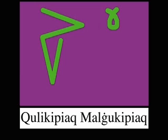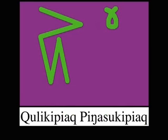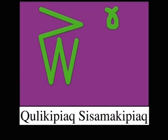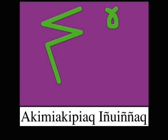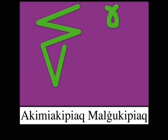The 240th number is kulikipiak malaguqi biak, 10 times 20 plus two times 20. The 260th number is kulikipiak pingasuki biak, 10 times 20 plus three times 20. The 280th number is kuli kipiak sisamakipiak, 10 times 20 plus four times 20. The 300th number is akimiya kipiak, 15 times 20. The 320th number is akimiya kipiak inuinyak, 15 times 20 plus 20.